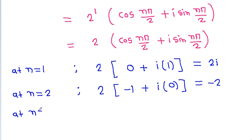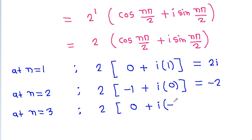At n equal to 3, it is 2 times [cos(3π/2) plus iota times sin(3π/2)]. Since cos(3π/2) is 0 and sin(3π/2) is minus 1, that gives minus 2 iota.